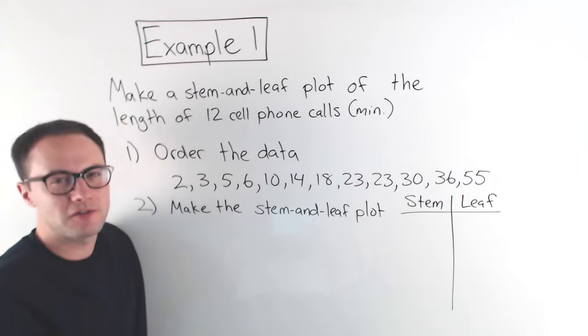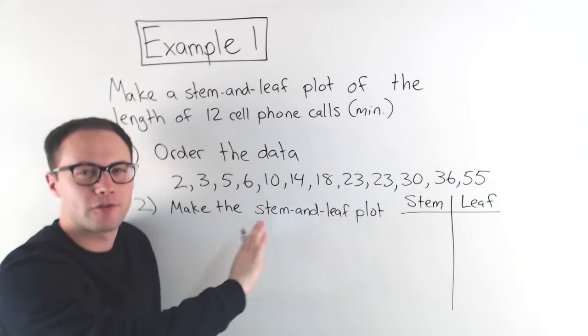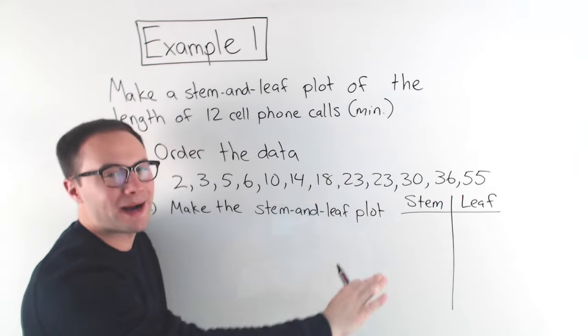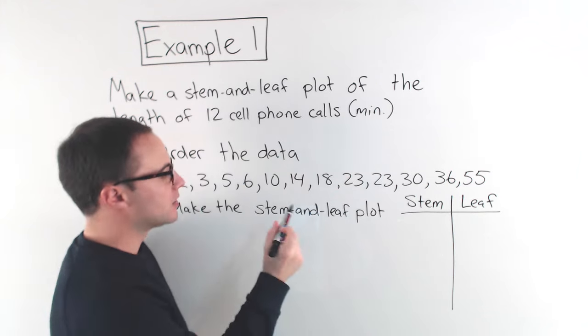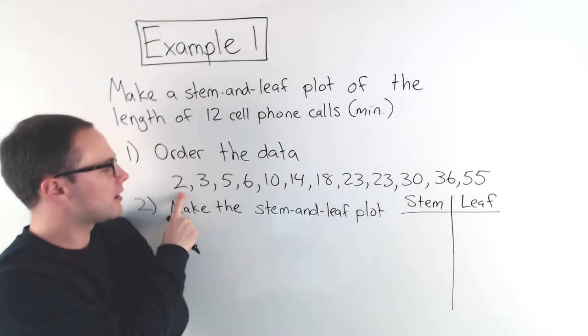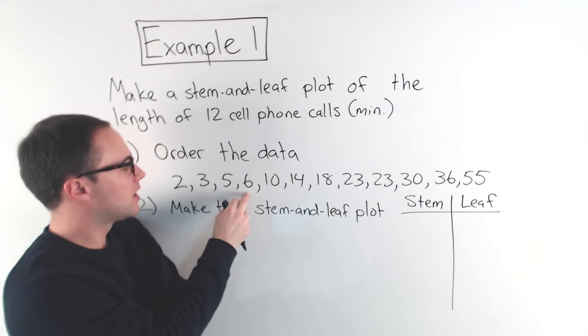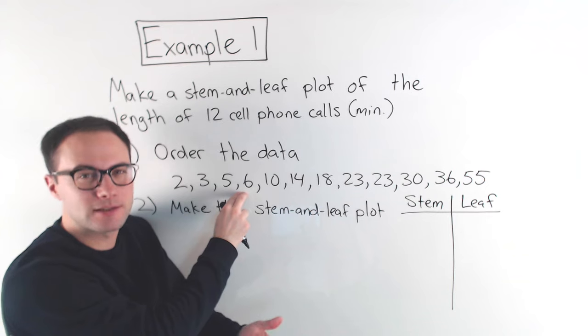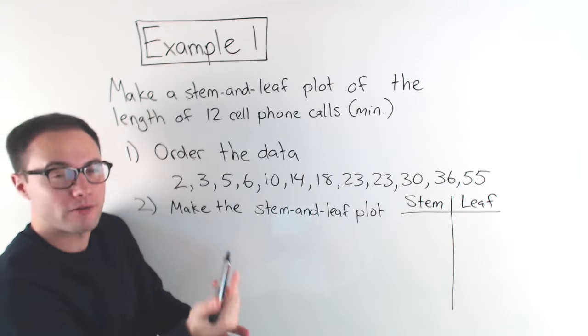If I look at my data, I go all the way from 2 to 55. With that kind of range, I'm going to go by tens for my leaf. So, first, well, 2, 3, 5, 6, what do they have in the tens place? Well, it's not there, but you can put a zero there, right?